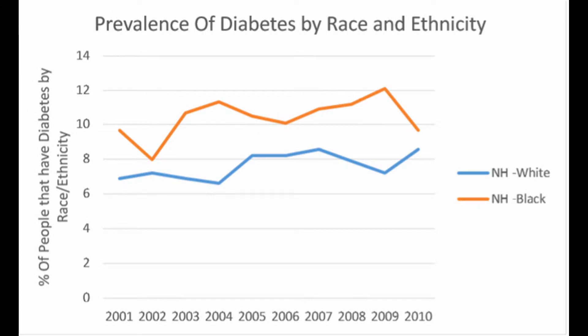For this graph, I looked at the prevalence of diabetes based on race and ethnicity from 2001 to 2010. The orange line represents non-Hispanic African American people, and the blue line represents non-Hispanic Caucasian people. Non-Hispanic African American people had the highest prevailing percentage in 2009, at 12%. There is a disparity among African American people, probably related to lower socioeconomic status. The way they eat — especially in southern states — they are more prone to eating high-sodium foods, high-sugar diets, fast foods, and less expensive foods.